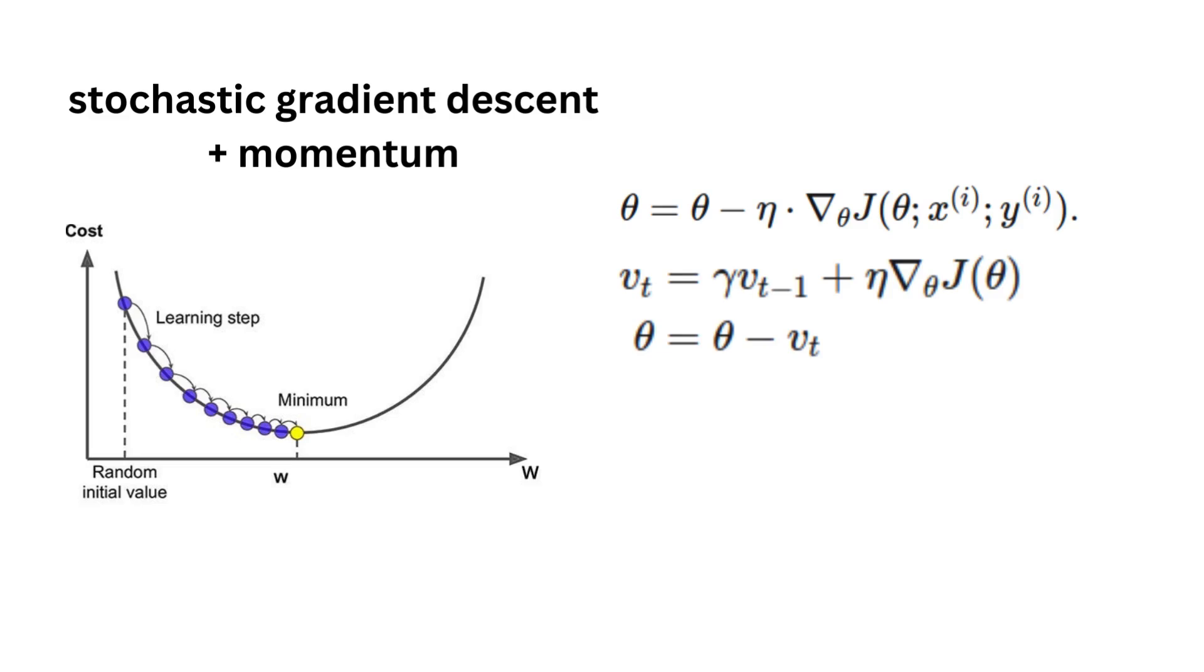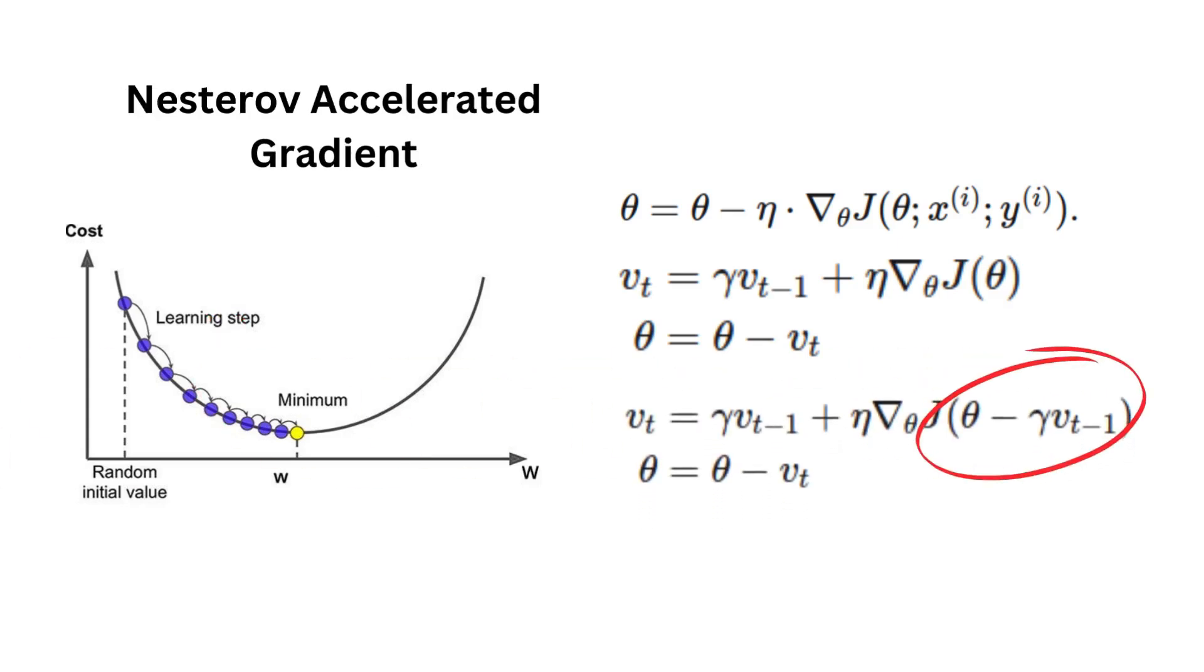If you add the momentum parameter, you take into consideration now the previous step you took, multiplied by a tunable momentum parameter. This will make your optimization have some sort of initial momentum that goes on throughout, making the iterations move more like a ball down the cost plane.